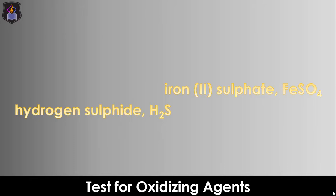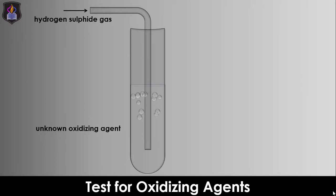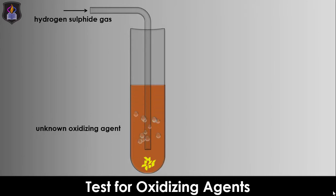Most Redox Reactions involve color changes due to the changes in the oxidation states of the ions and radicals involved, which makes it easy to observe when a reaction occurs. So, if we bubble a stream of hydrogen sulfide gas into an unknown solution or gas and observe the deposition of yellow sulfur, then the unknown substance is an oxidizing agent. This is because only an oxidizing agent can oxidize hydrogen sulfide to elemental sulfur, as shown in the first oxidation half equation.